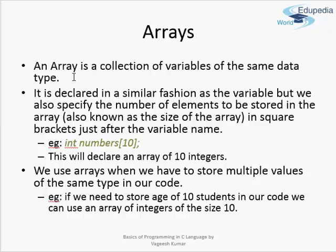Now, arrays. An array is a collection of variables of the same data type. All variables of one single data type can be stored in an array — for example, all integer type variables can be stored in one array. The same array cannot store variables of a different data type; it is not possible to store an integer and a character in the same array. The declaration of arrays is done in a similar fashion to variables, but we have to specify the size of the array using square brackets just after the name of the variable.